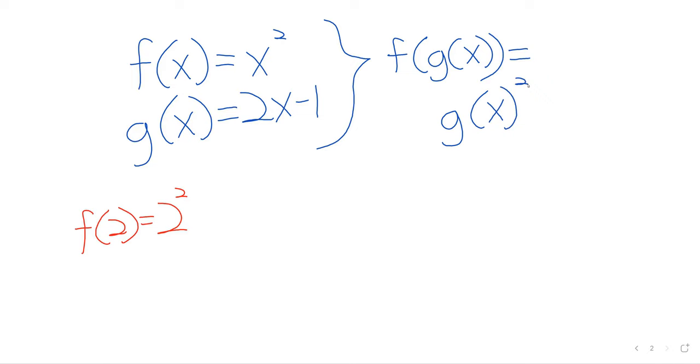So instead of having 2 squared when it was f of 2, we have g(x) squared now that it's g of x.